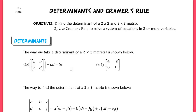This lesson is for section 11.5. We're going to be looking at determinants of matrices and Cramer's rule in order to solve systems of equations. Today's goal is to find the determinant of a 2x2 and a 3x3 matrix by hand, and also to use Cramer's rule to solve a system of equations in two or more variables.